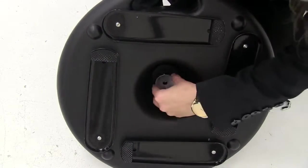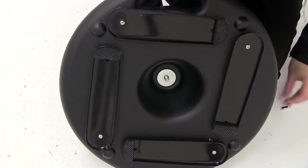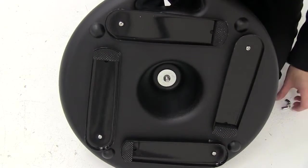Insert the large washer and the lock washer onto the support post. Use the included wing nut to secure.